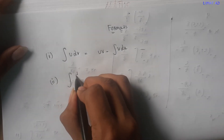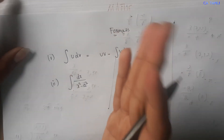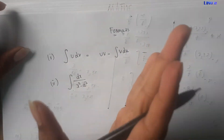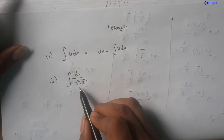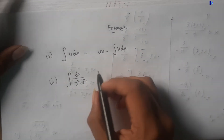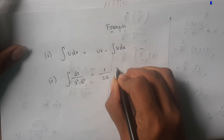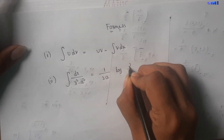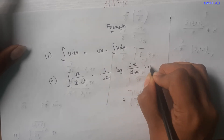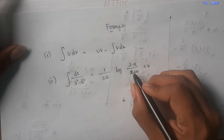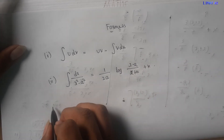The second important formula is: the integral of dx divided by x² minus a² equals 1 divided by 2a times log of (x minus a) divided by (x plus a), plus k. So the formula is: ∫1/(x² - a²) dx = 1/2a · log|(x-a)/(x+a)| + k.